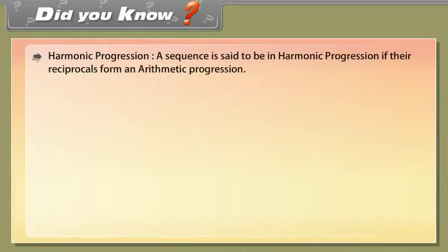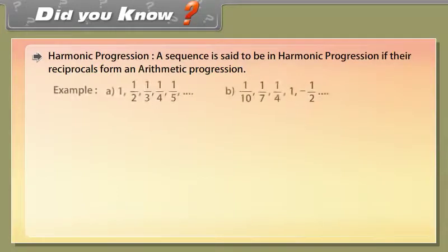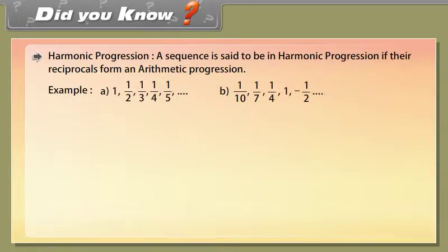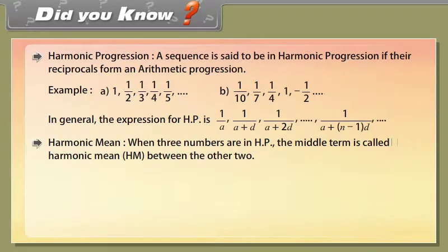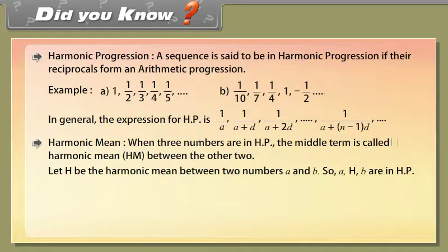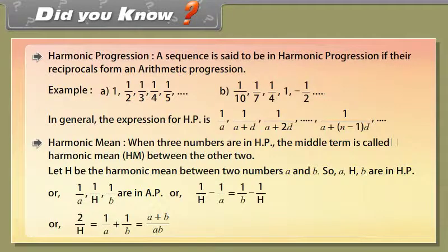Did you know: A sequence is said to be in harmonic progression (HP) if the reciprocals of its terms form an arithmetic progression. Examples: 1, 1/2, 1/3, 1/4, 1/5, ... and 1/10, 1/7, 1/4, 1, −1/2, ... The harmonic mean H between two numbers A and B satisfies: 1/A, 1/H, 1/B are in AP, giving H = 2AB/(A+B).